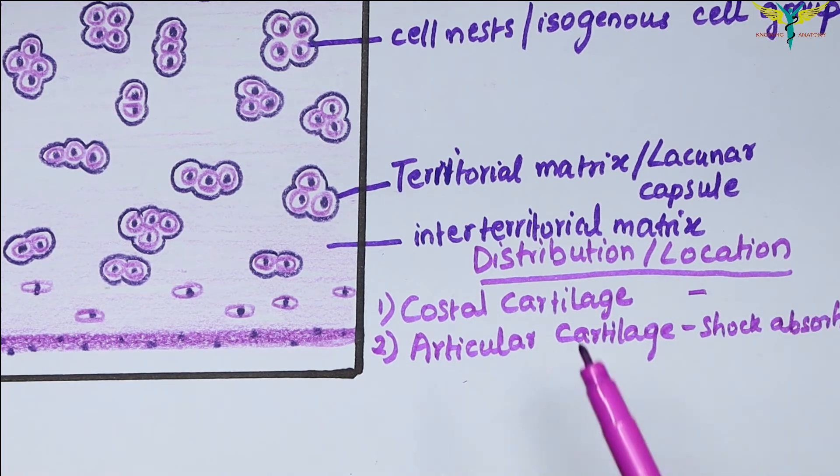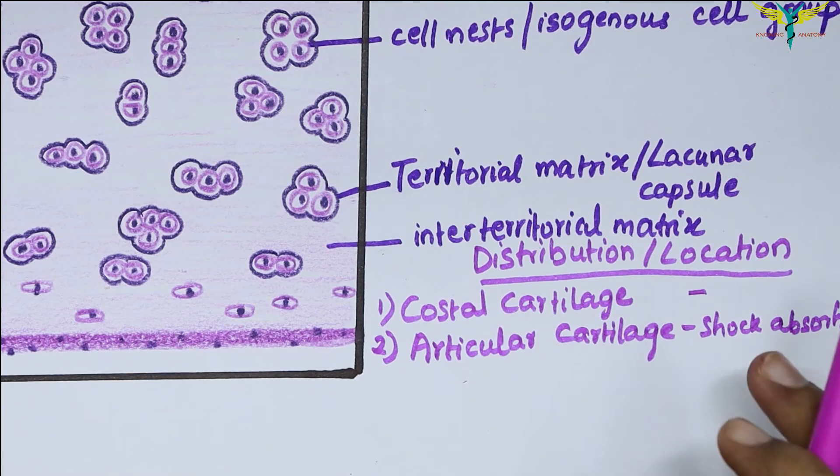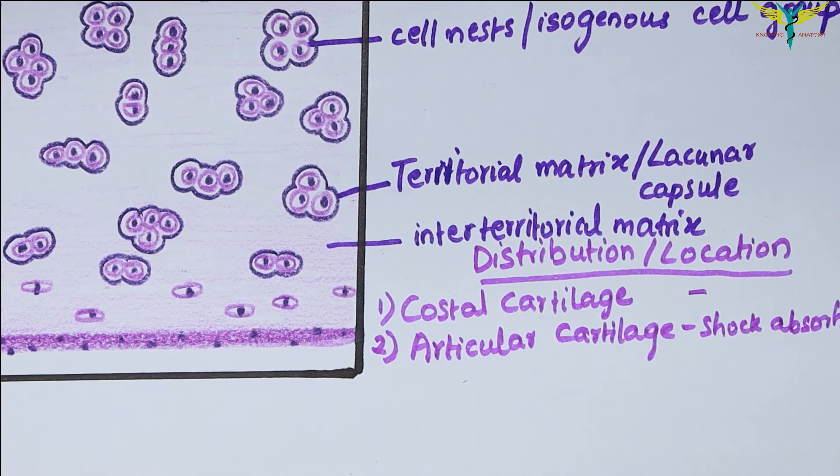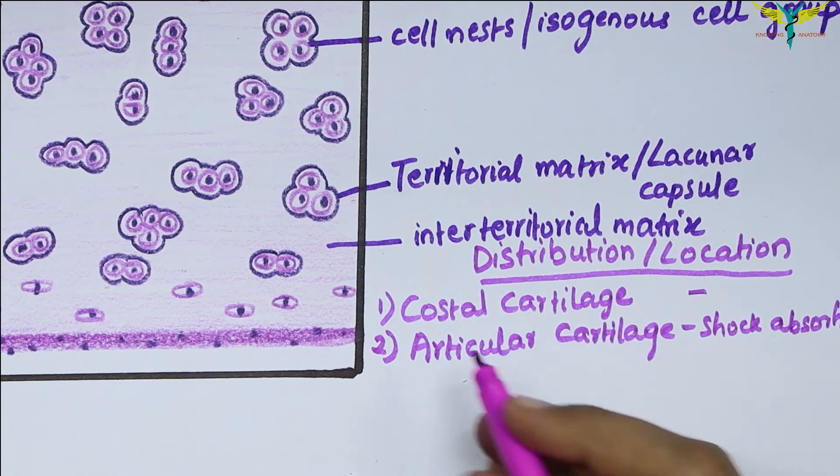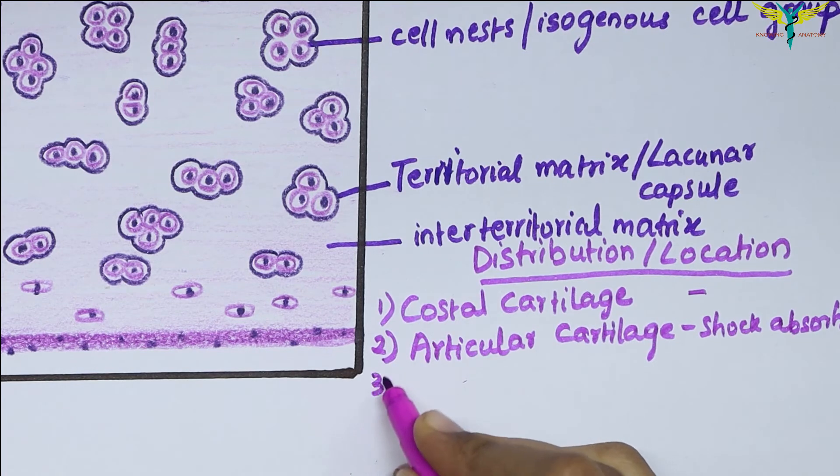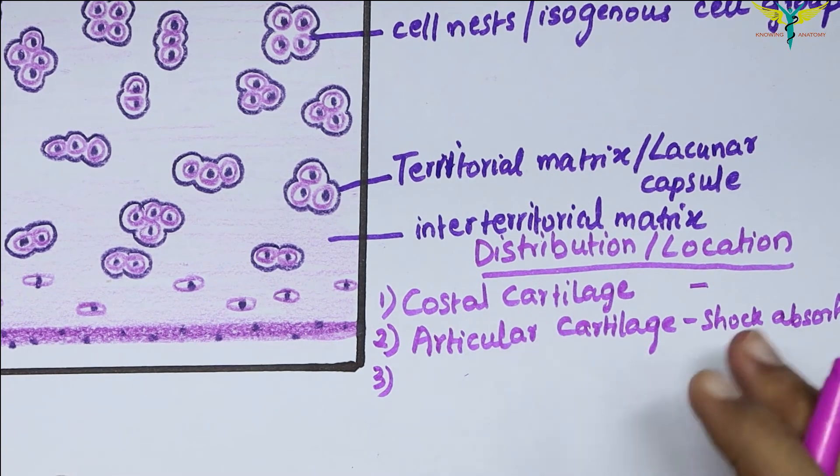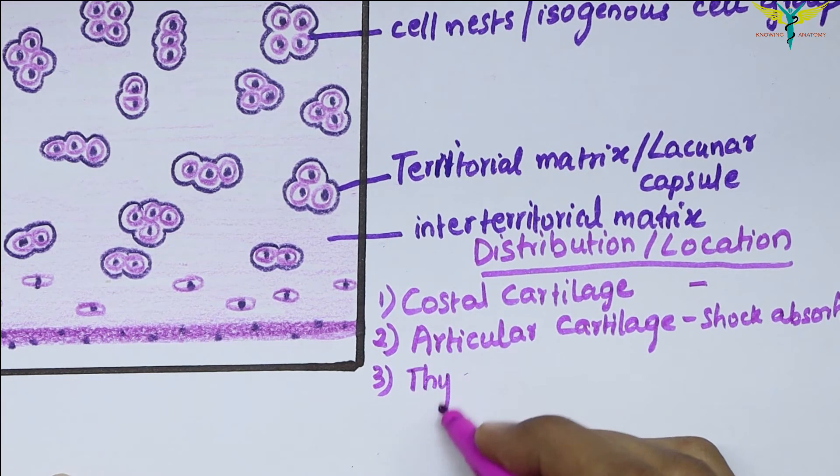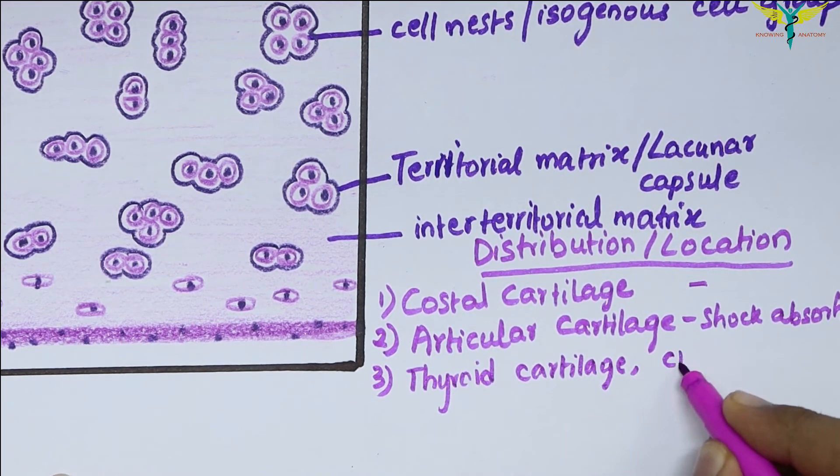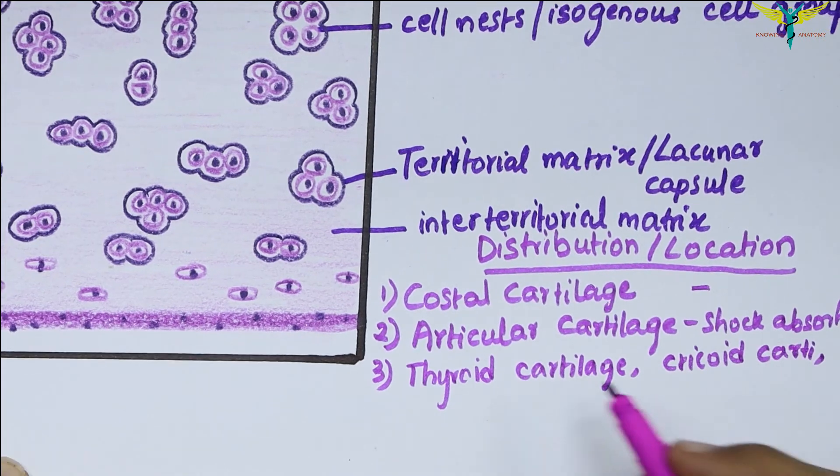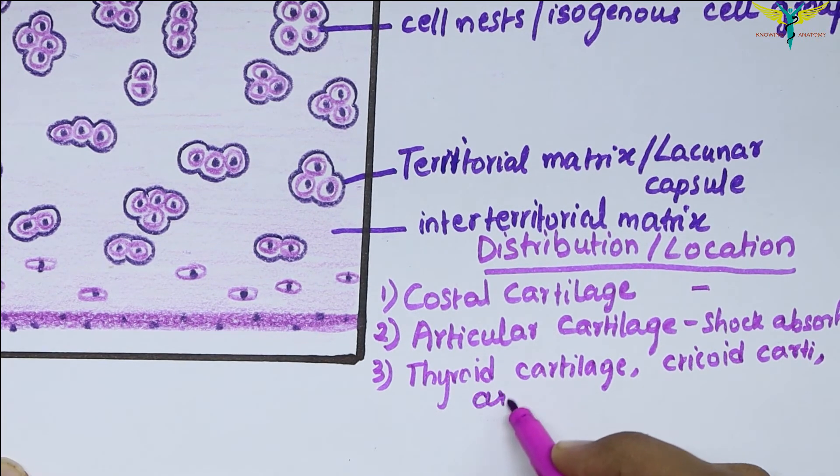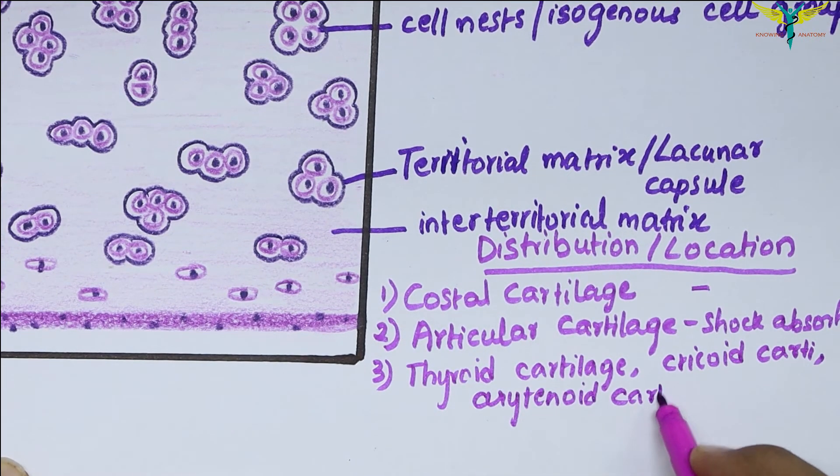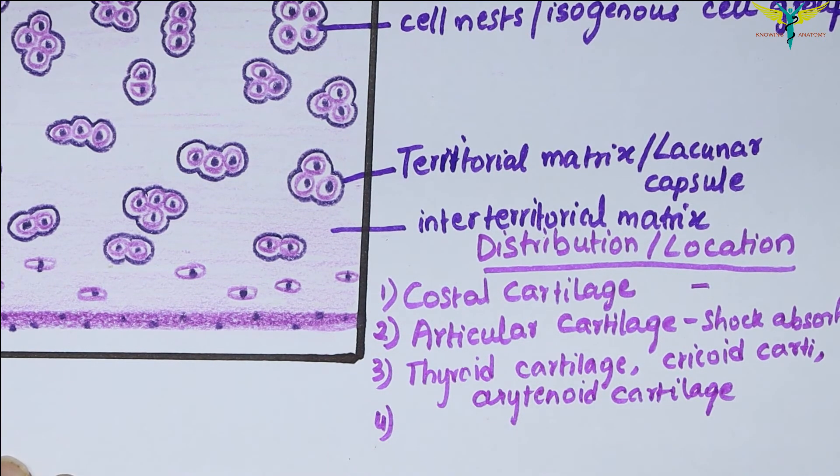Some other sites where the hyaline cartilage is present: the skeletal framework of the larynx, in which the thyroid cartilage, cricoid cartilage, and the arytenoid cartilage are composed of this hyaline cartilage. The walls of trachea and large bronchi contain incomplete rings of this cartilage.